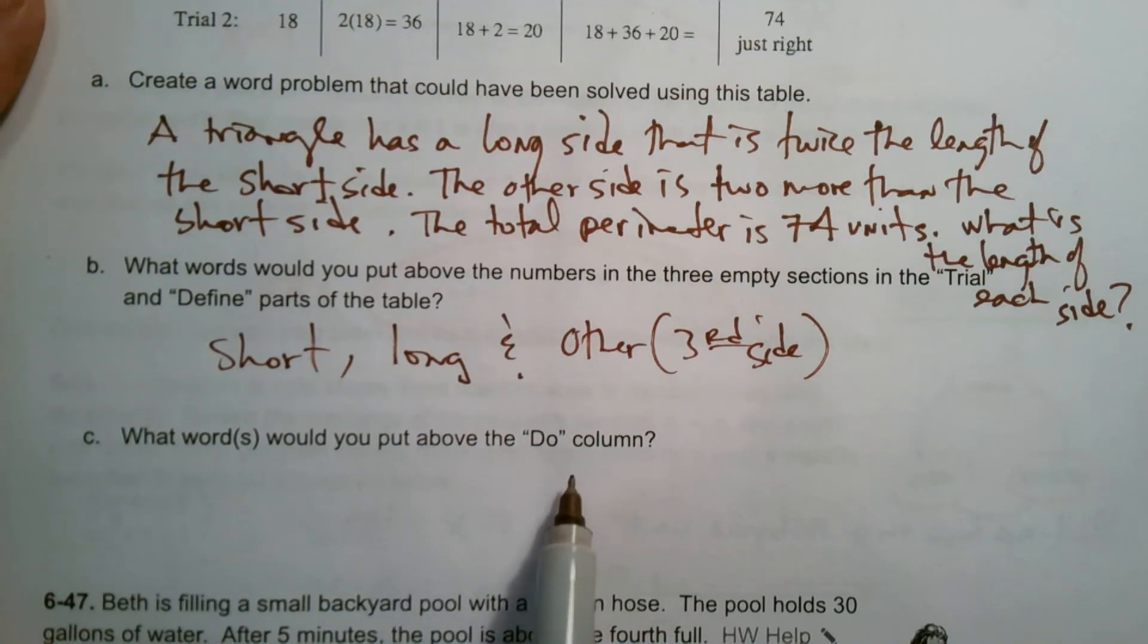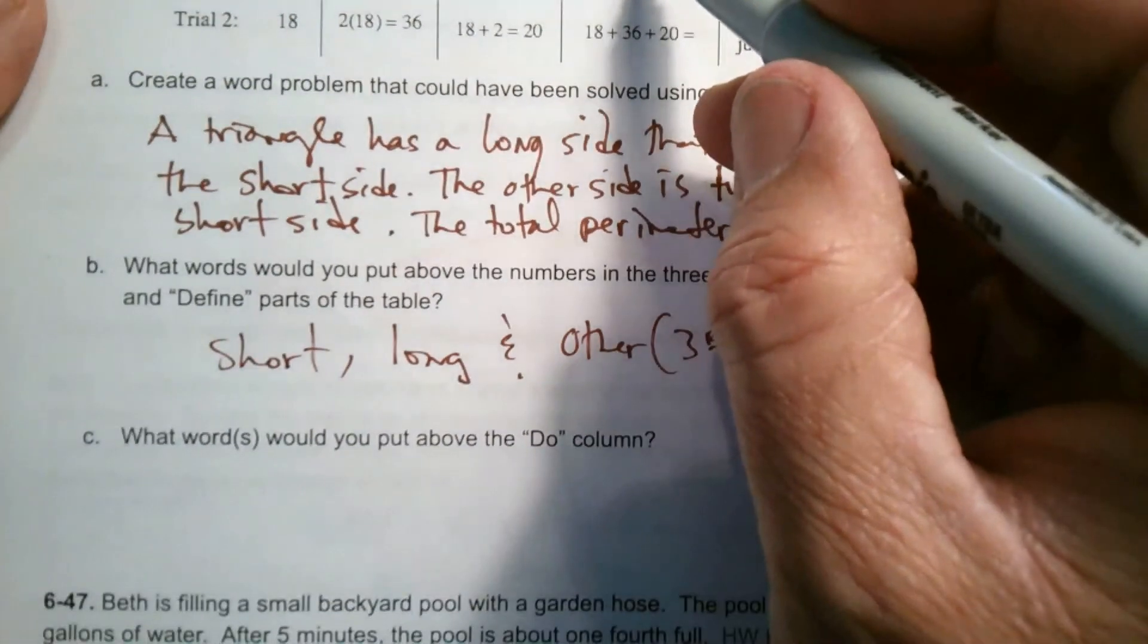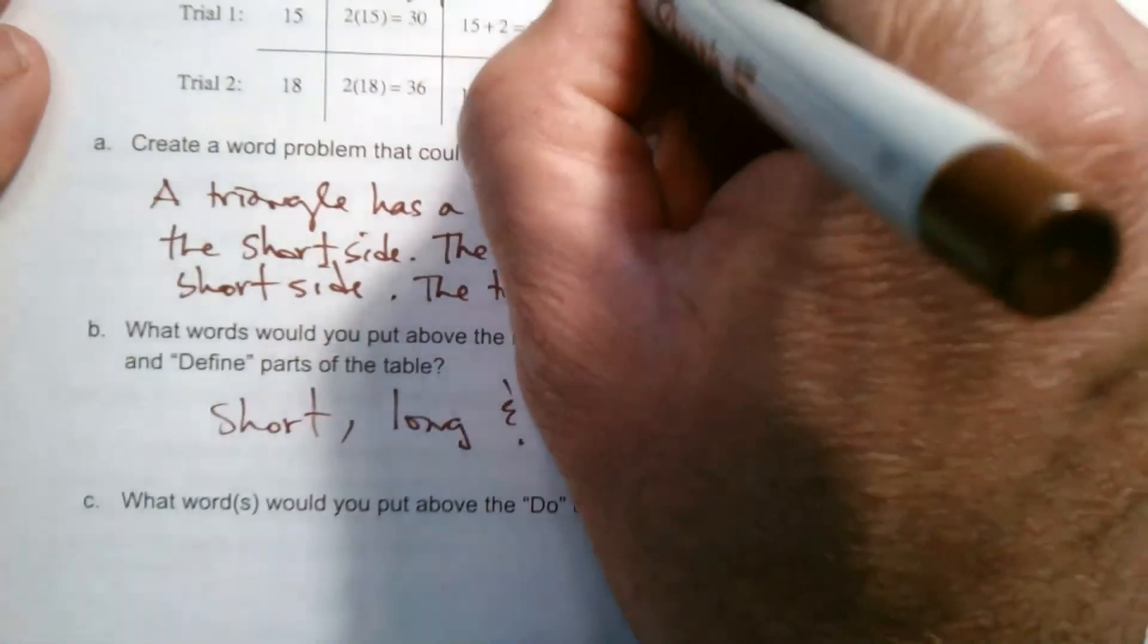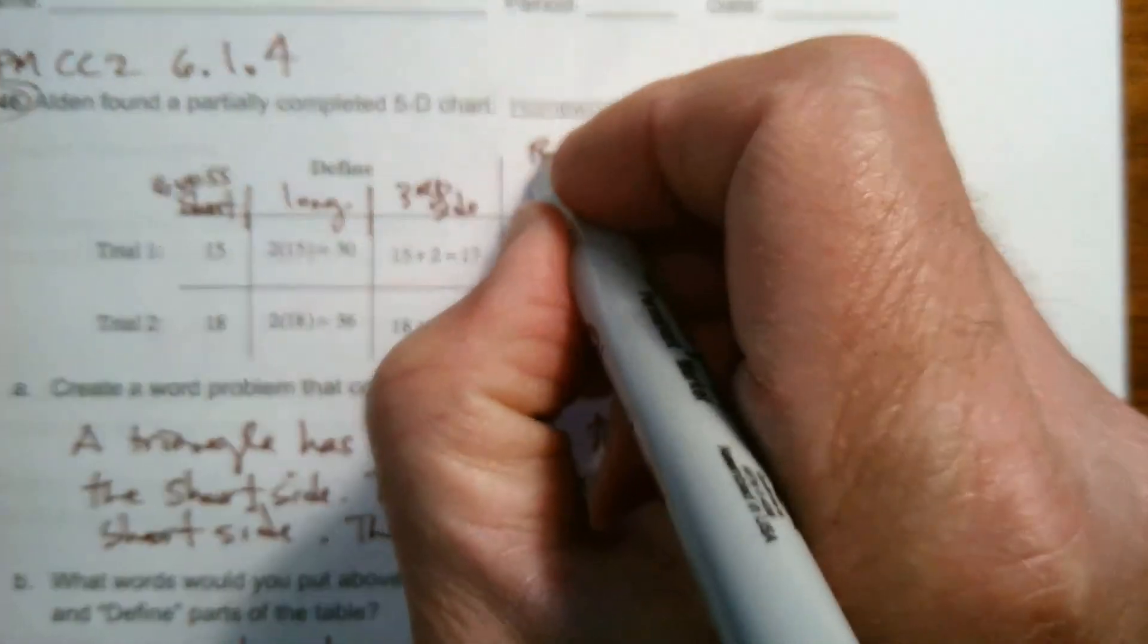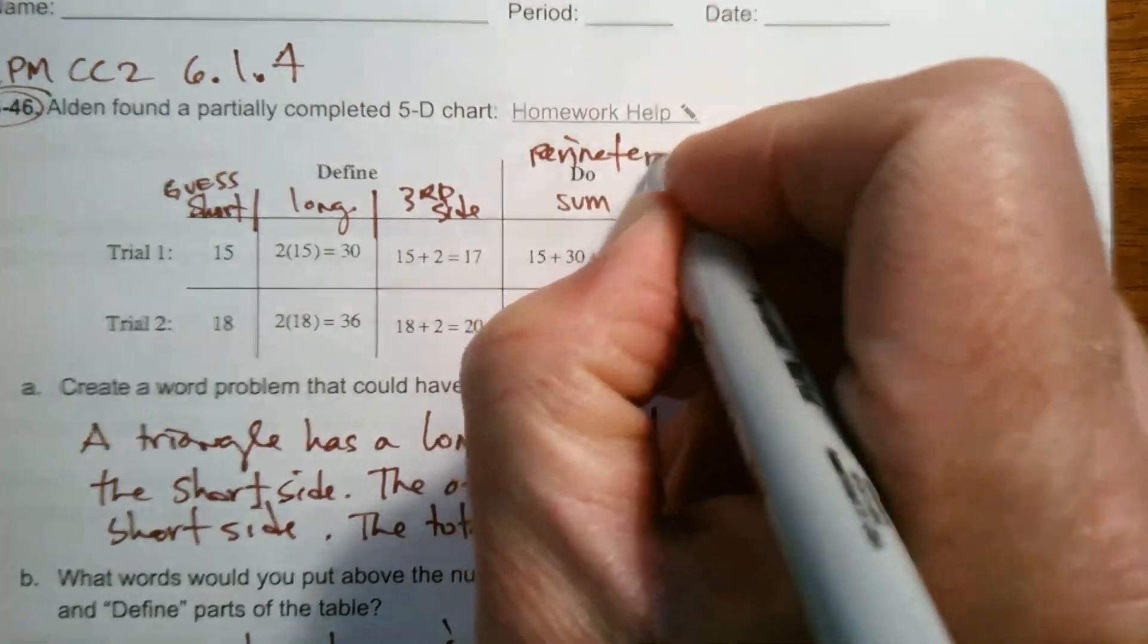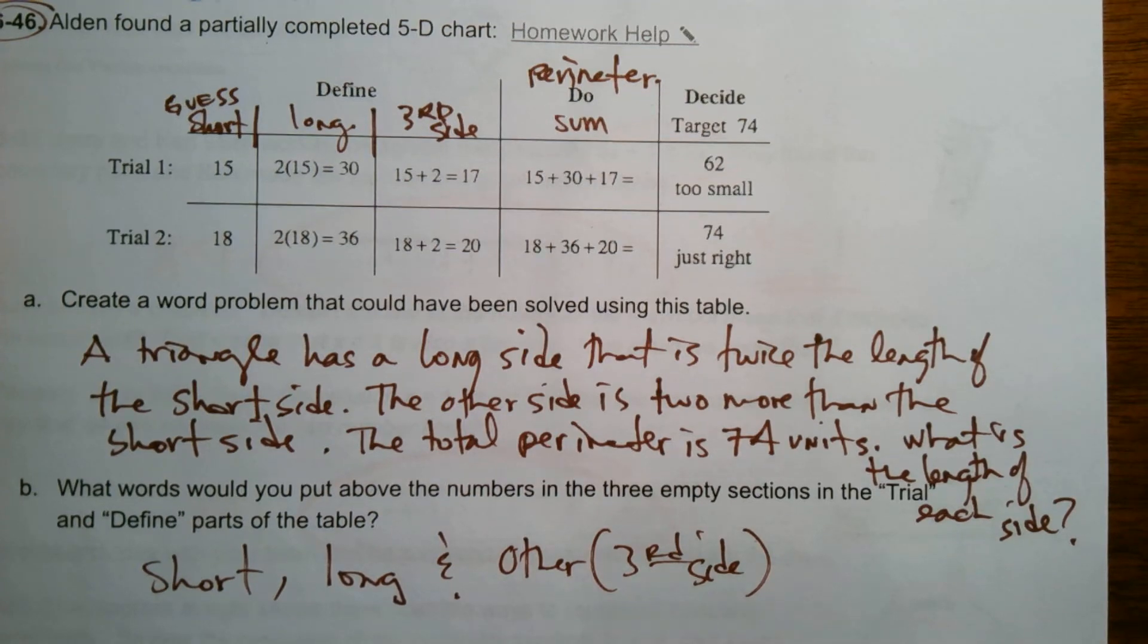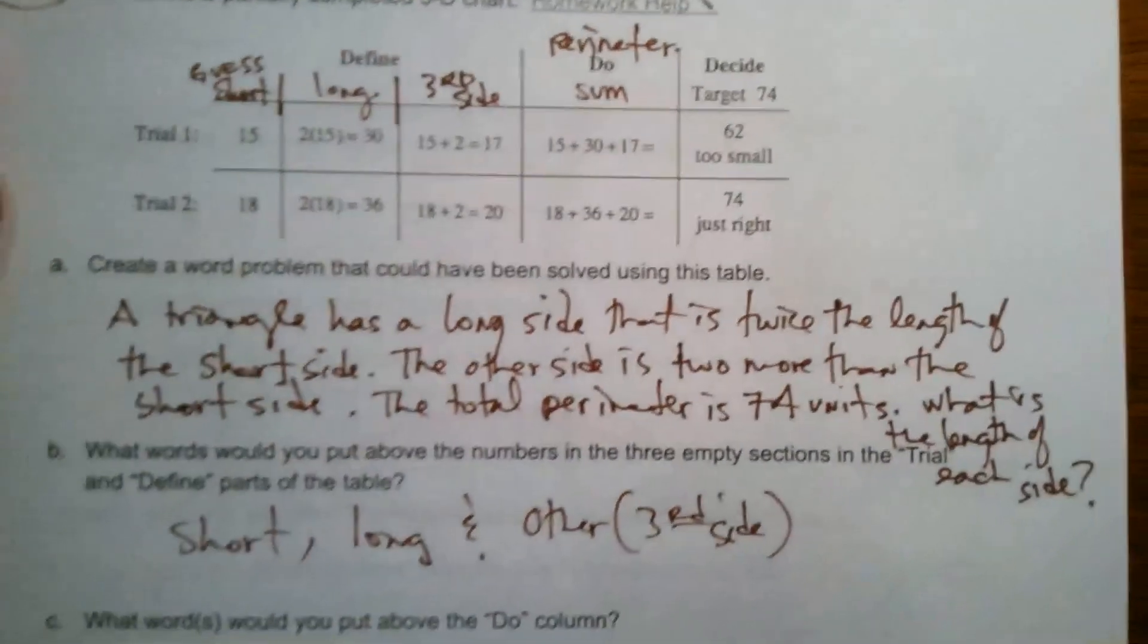What words would you put above the do column? Well, the do column in this case, I put the sum, but specifically for my problem, I would actually put perimeter. Sum or perimeter is what you're doing. All right. There we go. Hope that helps.